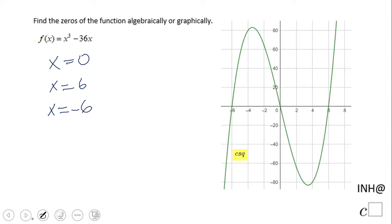You see the graph here. We see negative six, zero, and six. Sometimes we may want to use a graphing calculator, however